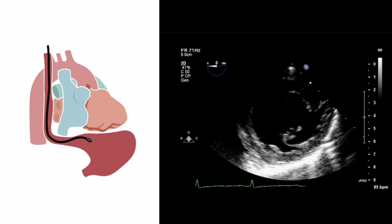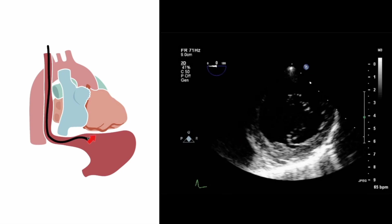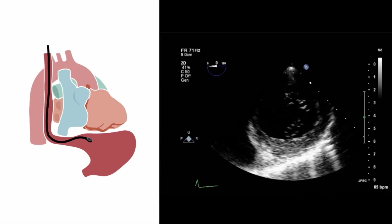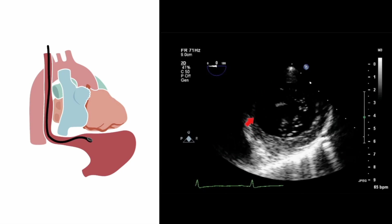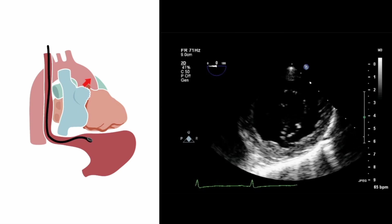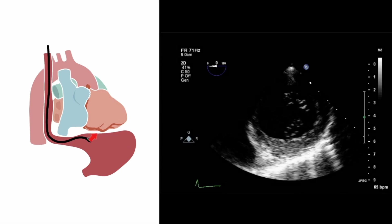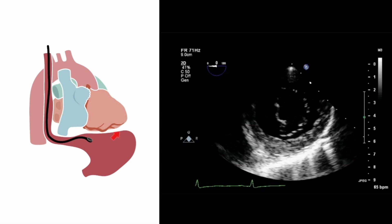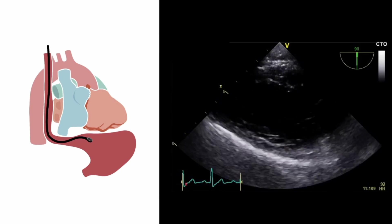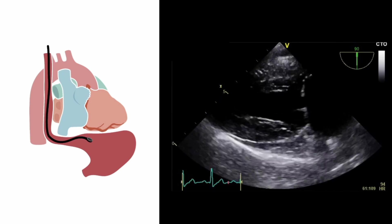By adjusting the position of the TEE probe — advancing or withdrawing it, or by anti-flexing or retroflexing the tip as necessary — we can obtain different slices through the heart. Here we have a basal short axis view where we're seeing the mitral valve on face, obtained by cutting through the heart in the imaging plane shown in the diagram. By advancing the TEE probe, we can obtain cuts through the mid-left ventricle or the apical portion. By adjusting the transducer imaging plane angle, we can also take cuts through the long axis of the heart as well as the short axis.